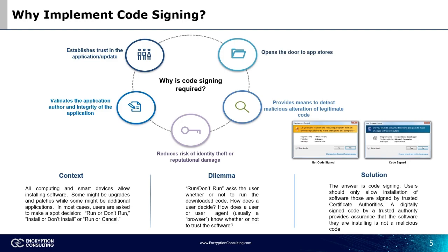All computing and smart devices allow installing software — some might be upgrades and patches while some might be additional applications. In most cases, users are asked to make a spot decision: run or don't run, install or don't install, or run or cancel. How does a user decide? How does a user or user agent know whether or not to trust the software? The answer is code signing.